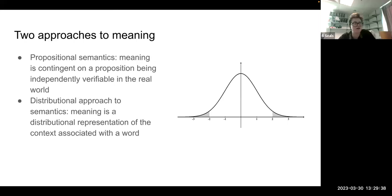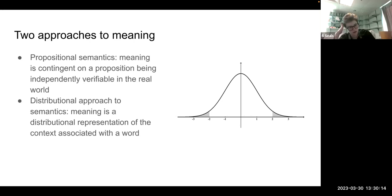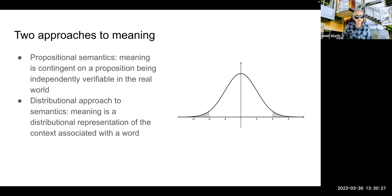Mitchell alludes to these but doesn't explicitly define them. There are two different approaches to what meaning is. The first is propositional semantics — the traditional view born out of formal linguistics and philosophy — where meaning is contingent on a proposition, a particular idea independently verifiable in the real world. The second approach is distributional semantics, where meaning is represented by a distribution of all the different contexts in which a word might be used.